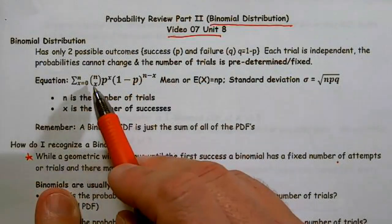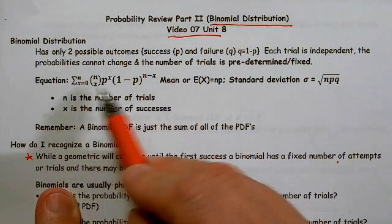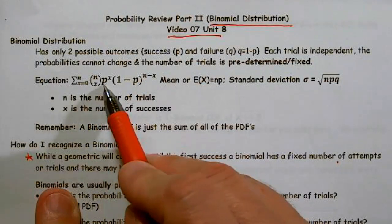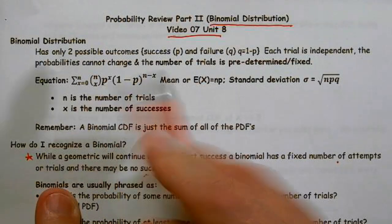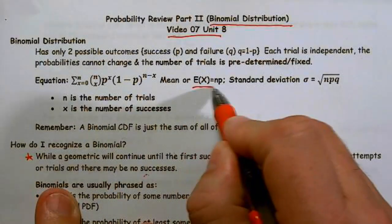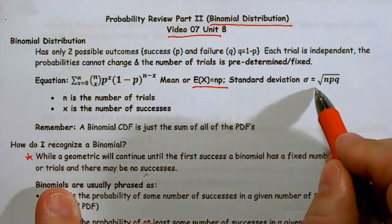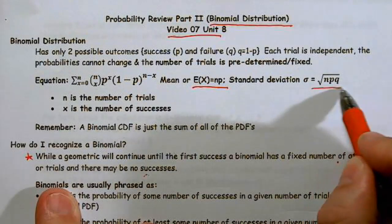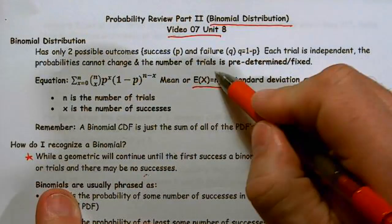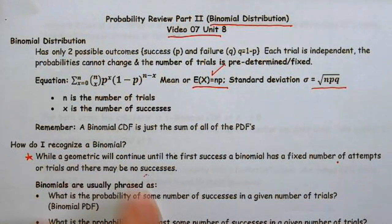The formula for the binomial is n-choose-x, where n is the number of trials, x is the number of successes, and p is the probability of success. Our expected value for a binomial — extremely important — is np, and this is our standard deviation. Make sure you've memorized this because you're going to use it so much.